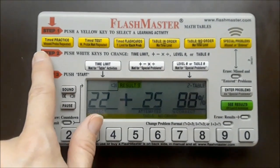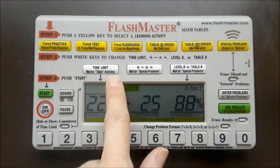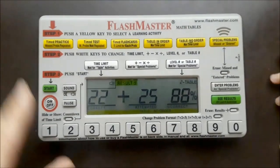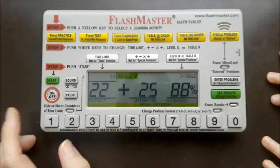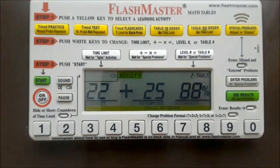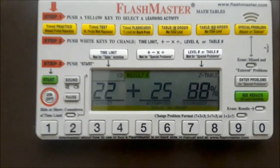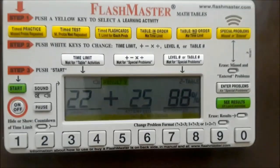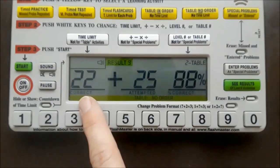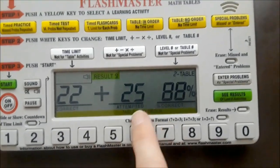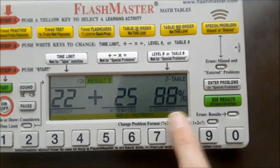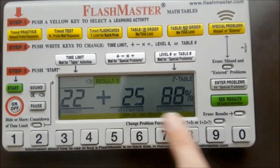Okay, so if you're doing a type of problem that you can time, you can also set it to time each individual problem. So if you want them to be able to answer them within three seconds, two seconds, or one second, that helps them work up to speed. And then it shows you the results—I got 22 correct out of 25 attempted for a percentage of 88.